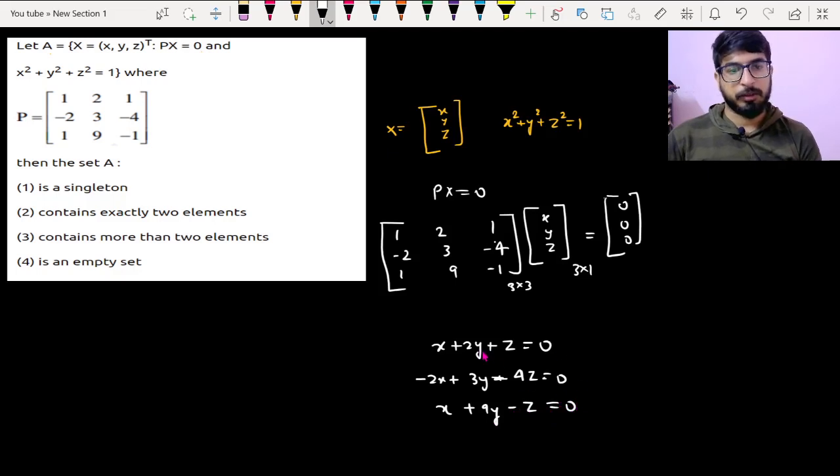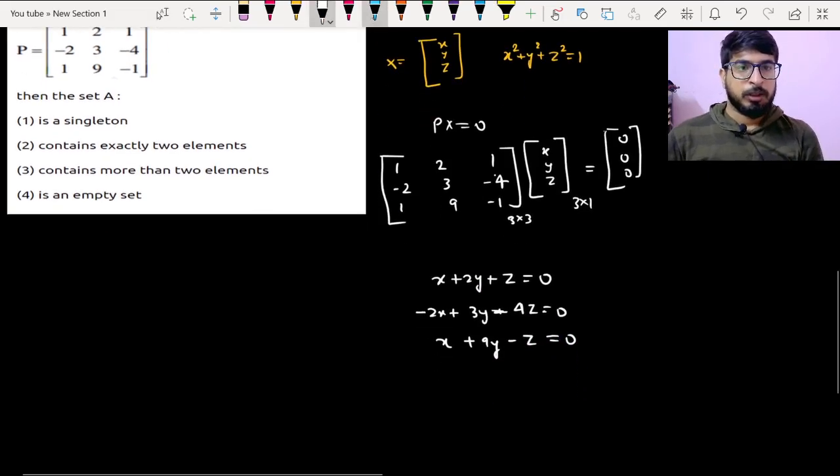Now if you observe this value of the determinant, P determinant of P is 0.